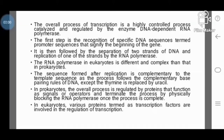The first step is the recognition of specific DNA sequences termed promoter sequences that signify the beginning of the gene. It is then followed by the separation of two strands of DNA and replication of one of the strands by the RNA polymerase. The RNA polymerase in eukaryotes is different and complex.